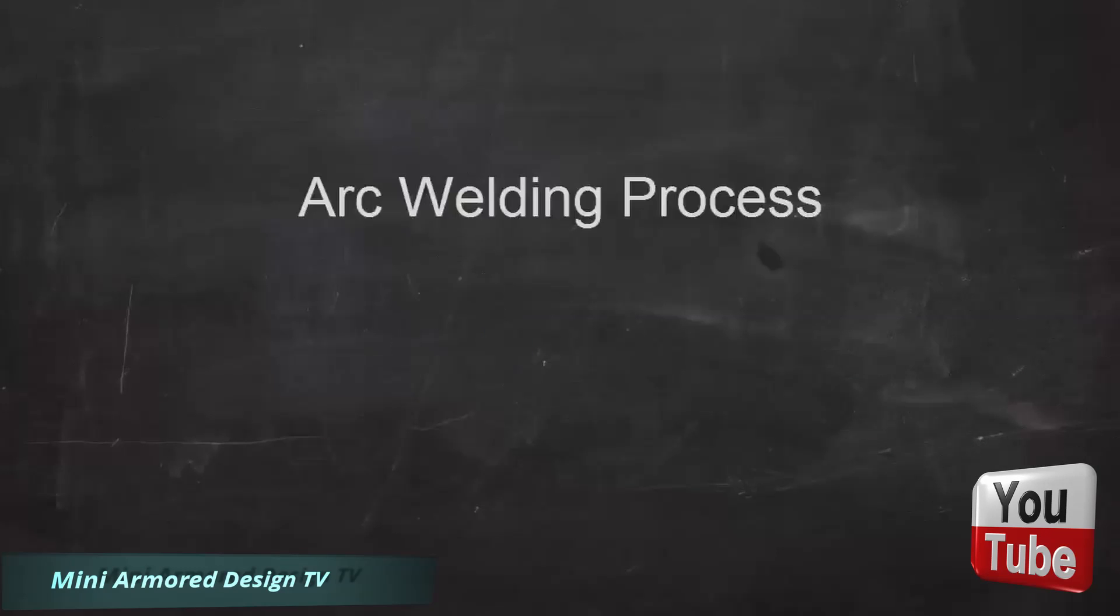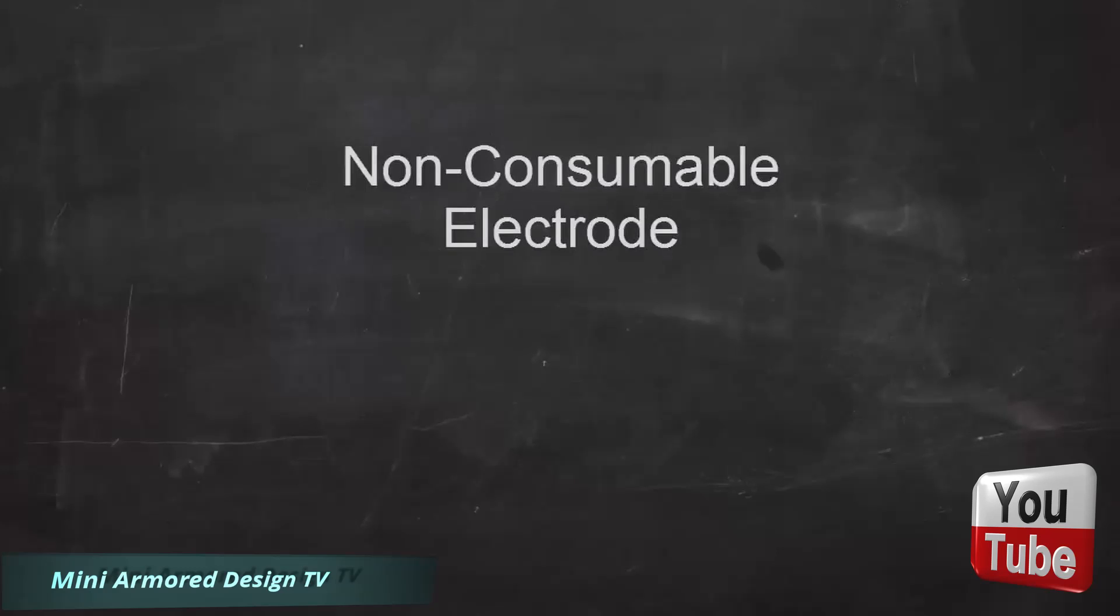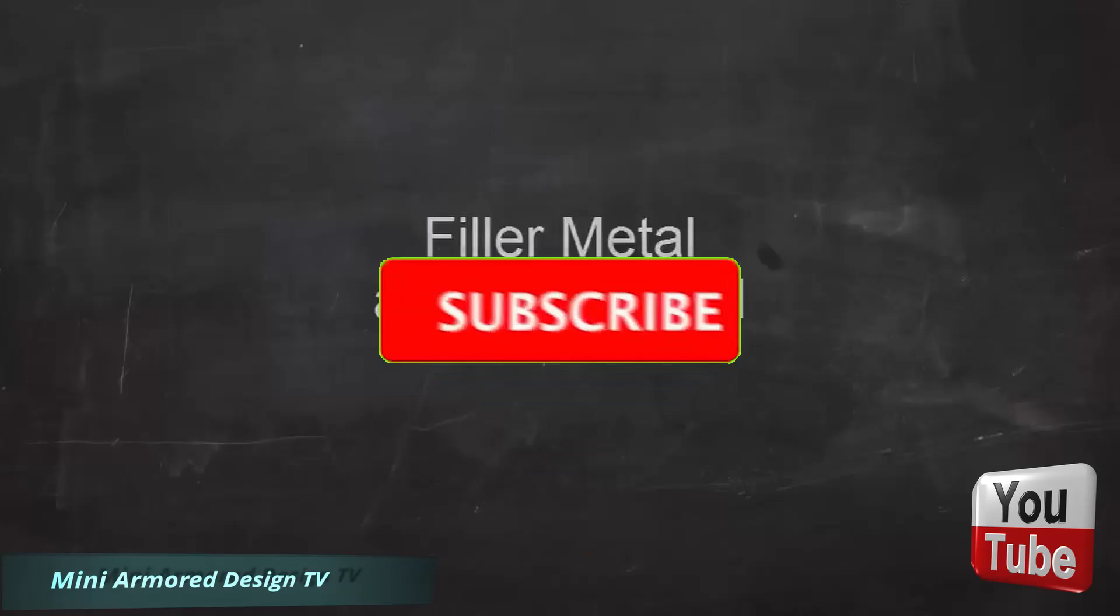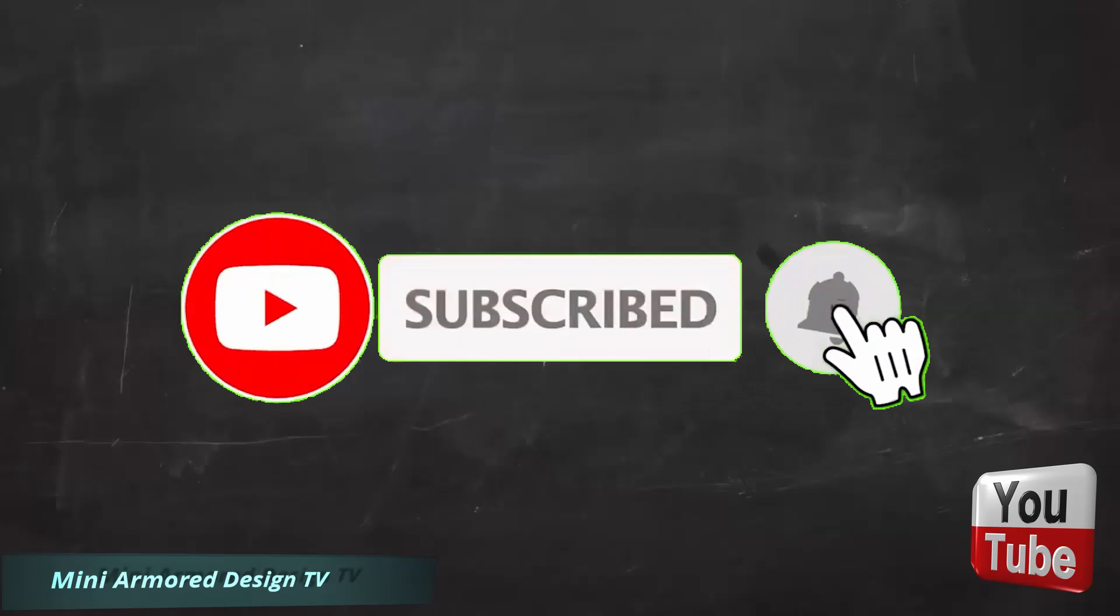So in summary, TIG welding is an electric arc welding process that uses a non-consumable tungsten electrode. The filler metal is added separately in the form of filler rods, and the shielding gas comes from a high-pressure cylinder.